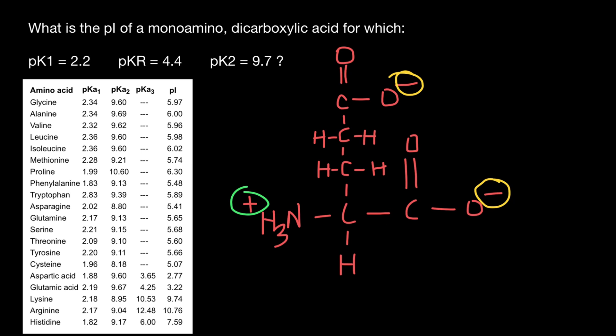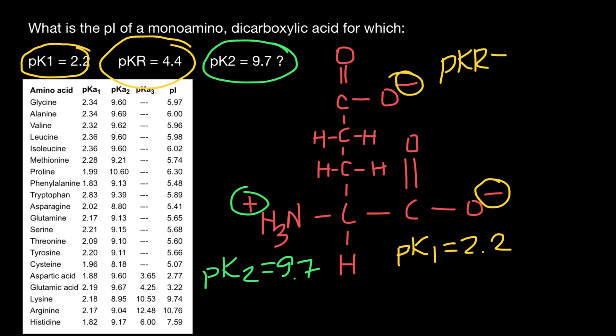But this is not quite right because in chemistry, this group, which is the carboxylic acid group, has priority over the amino group. So pKa1 is going to be this group. So pKa1 is 2.2, and pKa2 is 9.7, and pKaR is 4.4.